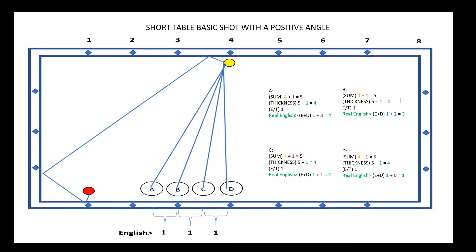When calculating for a short table with a positive angle, after the 4th diamond, your thickness will always remain at 4.